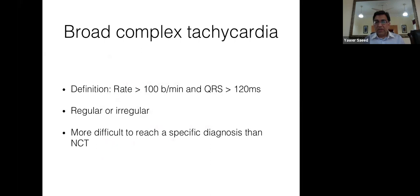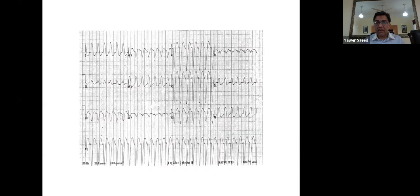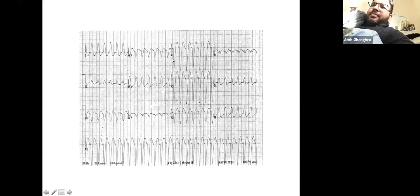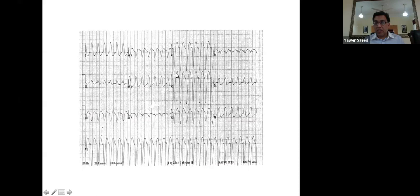Another broad complex tachycardia with QRS duration greater than 120ms — this one shows a typical left bundle branch block pattern: negative in V1, positive in V6. If the QRS is broad and V1 is negative, it is left bundle branch block. If QRS is 120ms or more and V1 is positive, it is right bundle branch block.